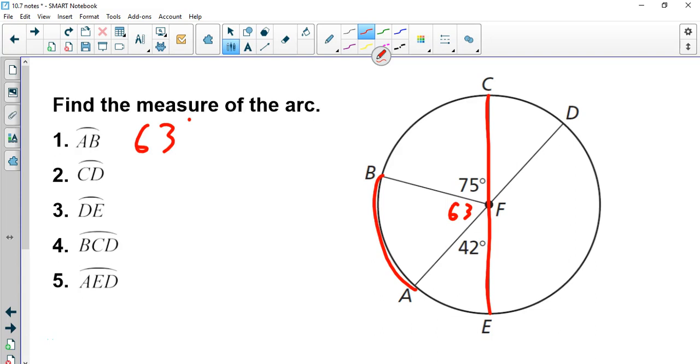Now CD, let's look at that. CD is formed by these two lines right here. Well, what we have there is vertical angles, so that's 42 degrees. DE, well, DE right here is the balance of 180 minus 42, which is 138.